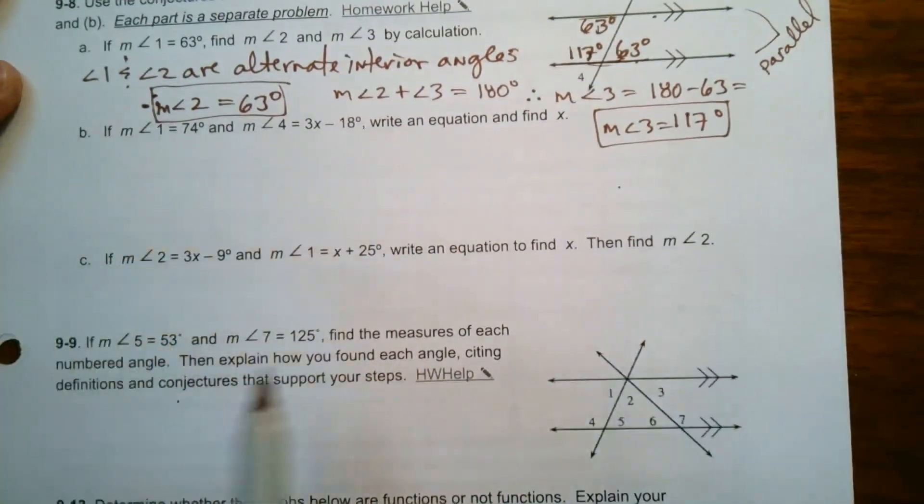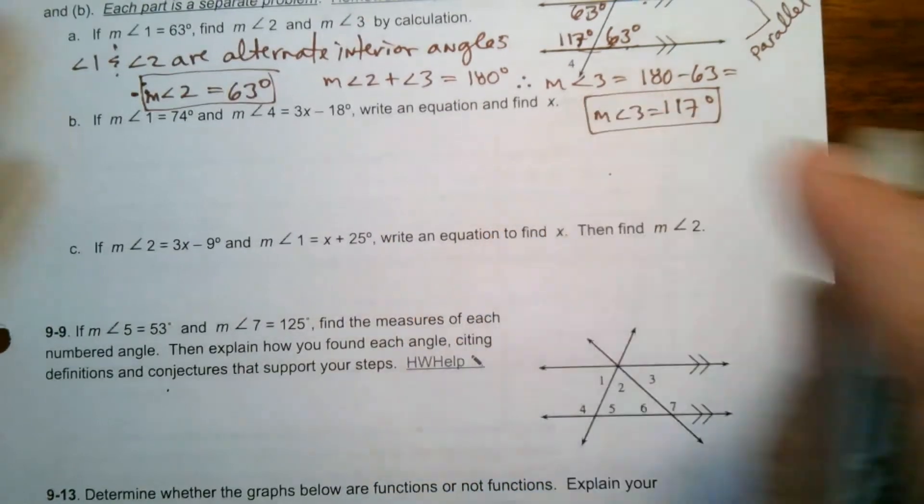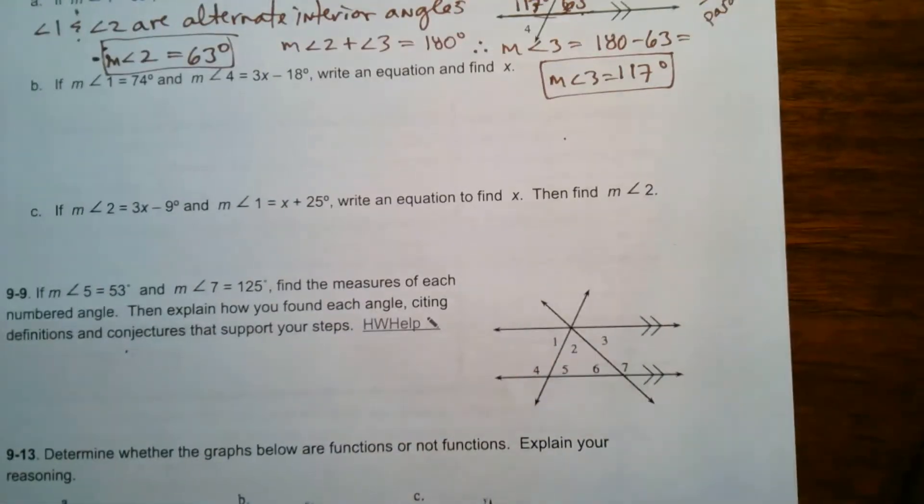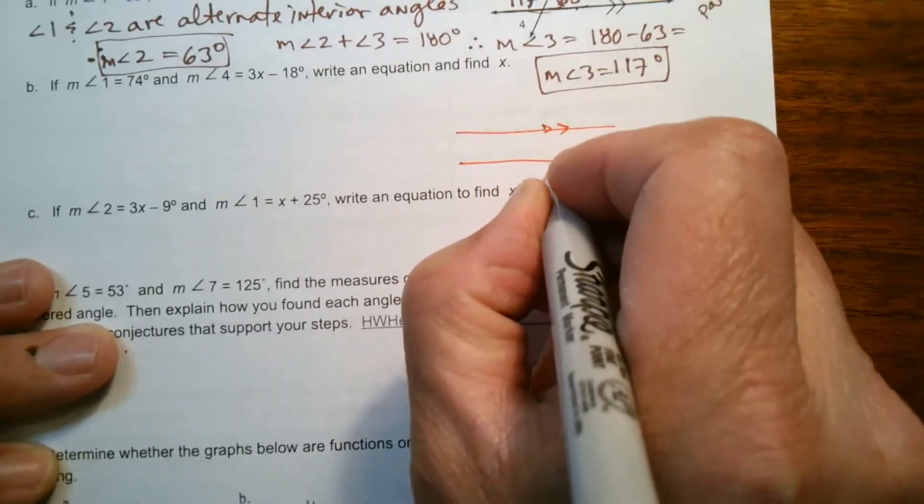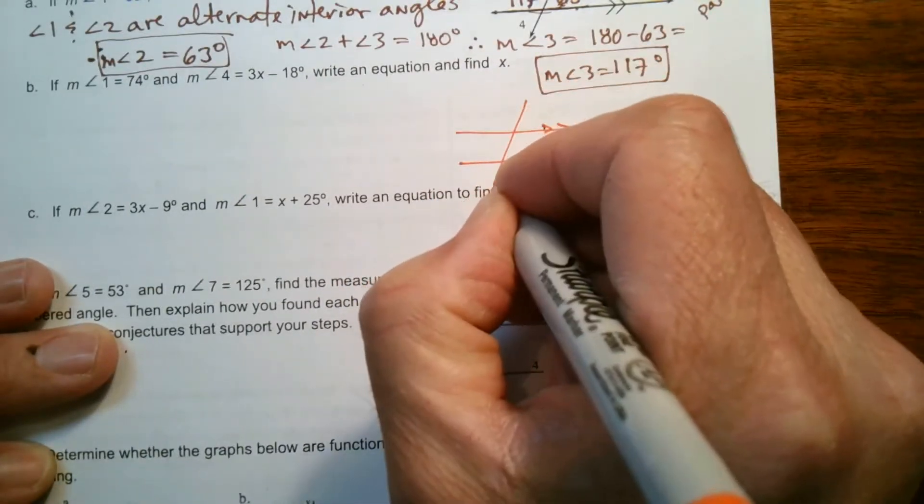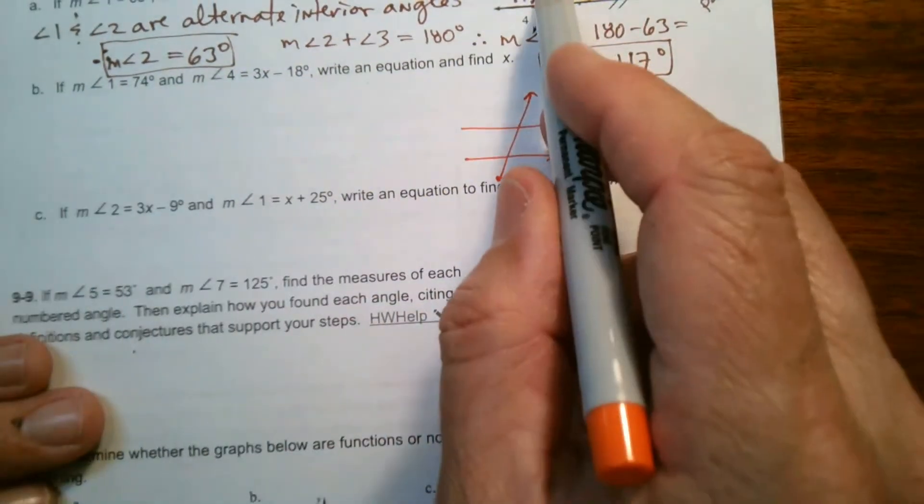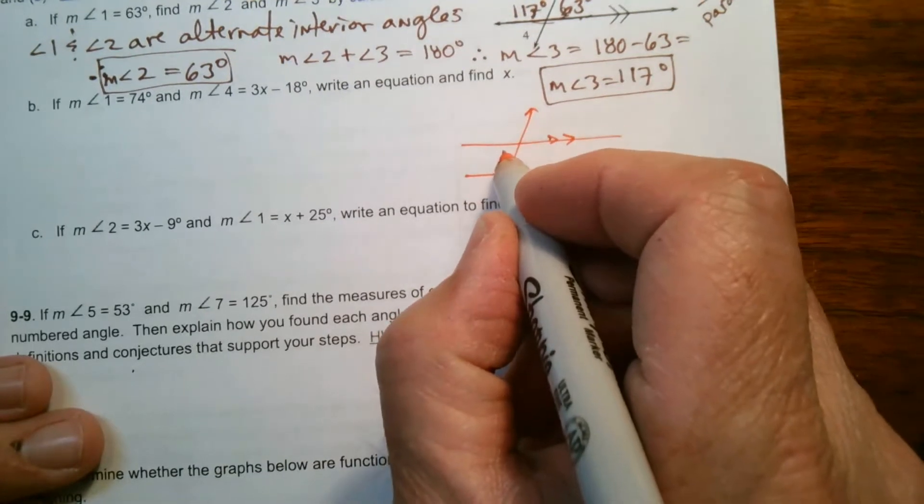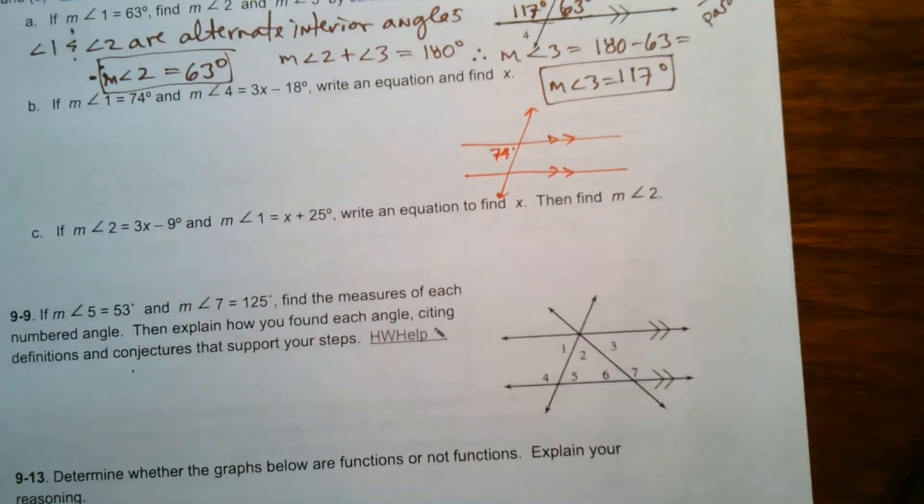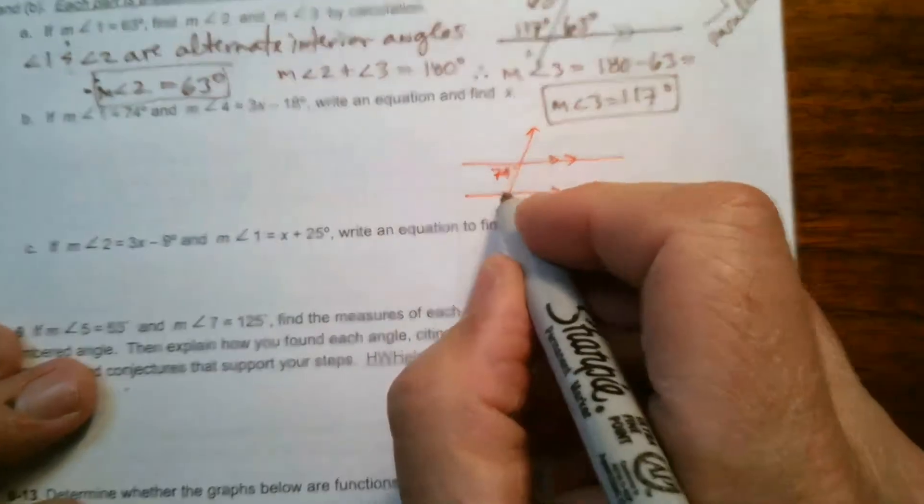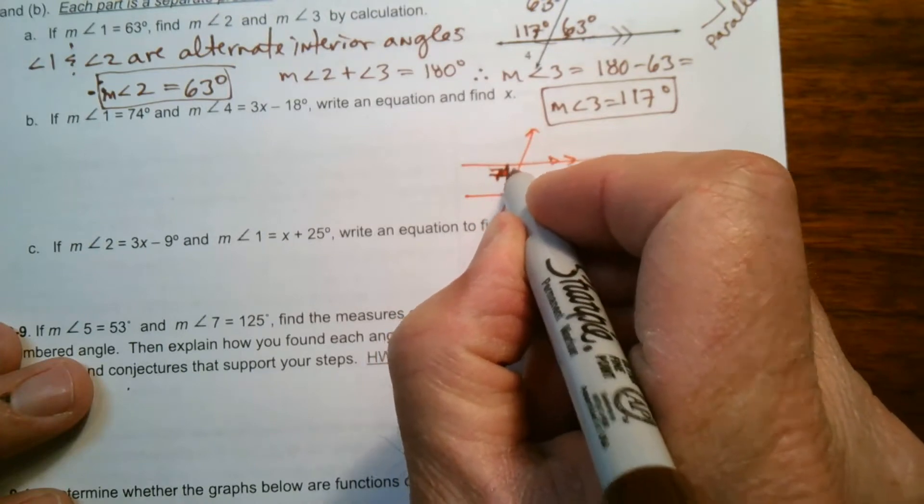So now let's move on to B. B says it's a whole different problem. So I'm going to do a quick sketch of my original two angles. So I had my two parallel lines and the transversal. And now it says that angle 1, angle 1 was this one here, down here. Angle 1 is 74 degrees. So angle 1 is 74 degrees.